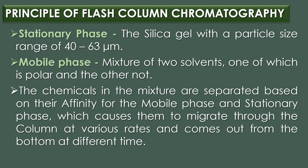The mobile phase used in flash column chromatography is a mixture of two solvents, one polar and one non-polar, though sometimes just one fluid can be used. The chemicals in the mixture are separated based on their affinity for the mobile phase and stationary phase, which causes them to migrate through the column at various rates and exit from the bottom at different times.